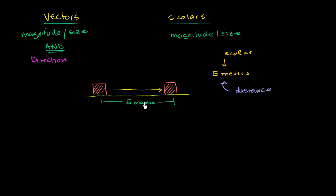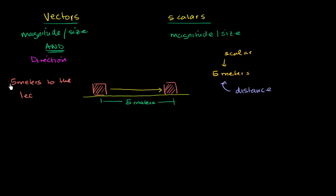But if someone just told you that it moved a distance of five meters, you wouldn't know if it moved to the right five meters, to the left five meters, if it moved up or down, or in or out — you just know it moved five meters. If you want to specify that, we could say that this brick moved five meters to the left.